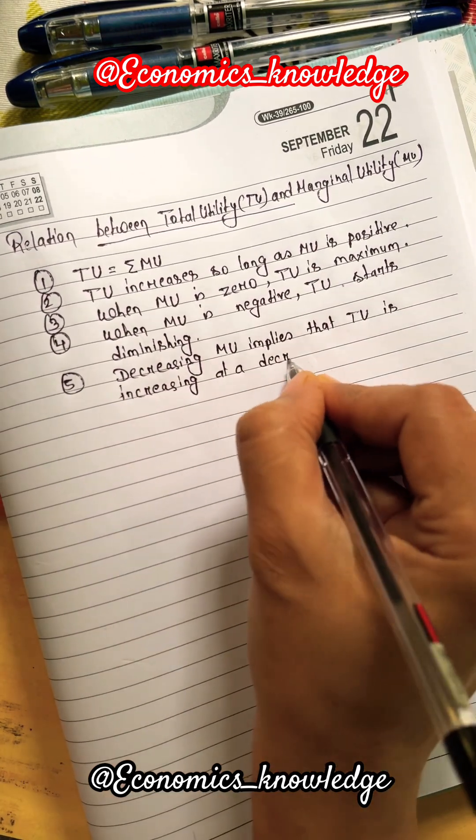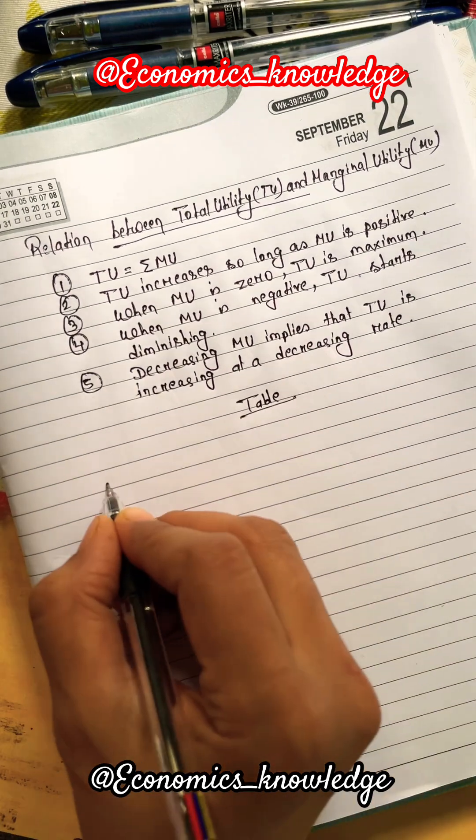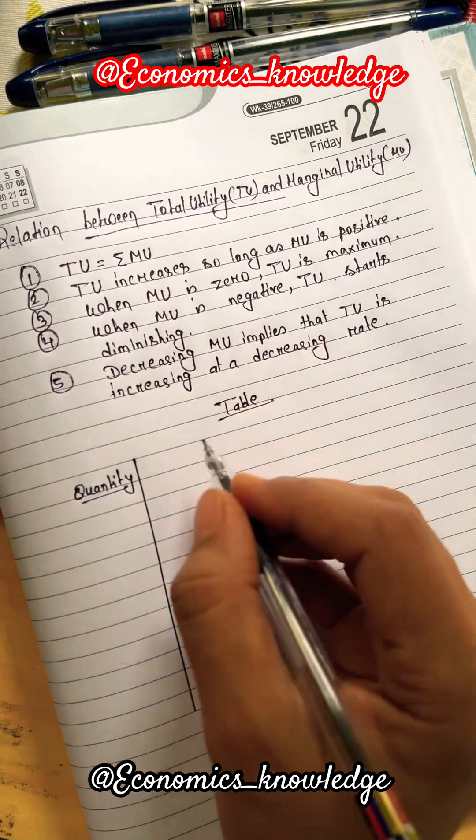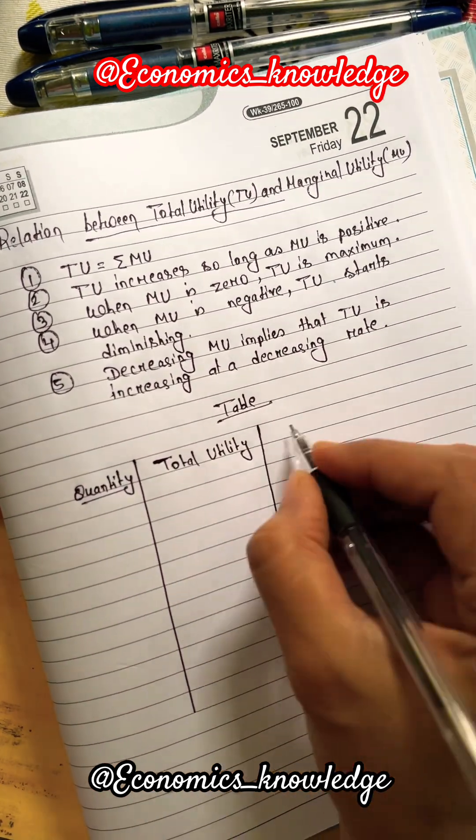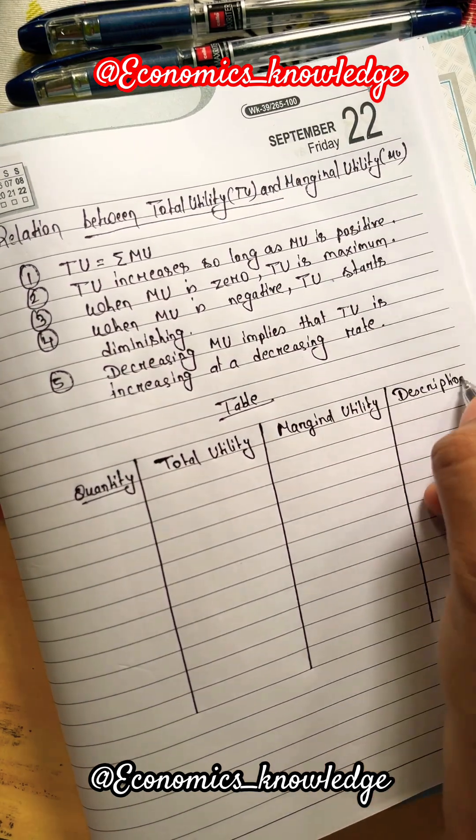We will understand the relationship between total utility and marginal utility from the table and diagram. In the table, quantity is given. Total utility is also given. We will calculate the marginal utility and draw the description.